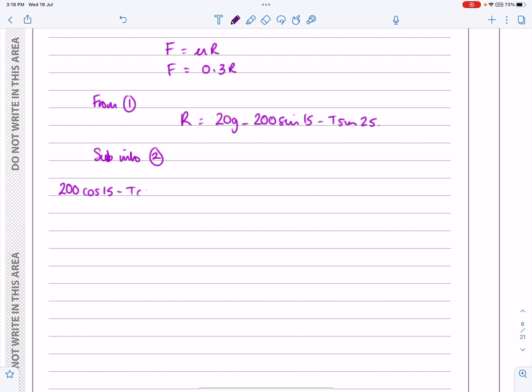minus T cos 25 minus F but F is mu R so it's mu 20G minus 200 sine 15 minus T sine 25 equals 0.